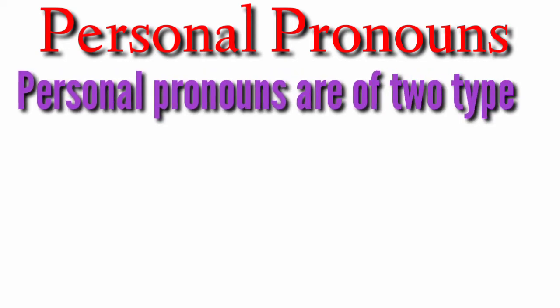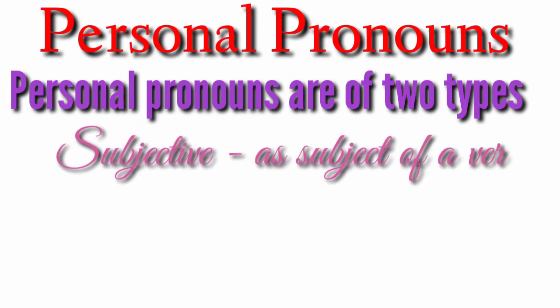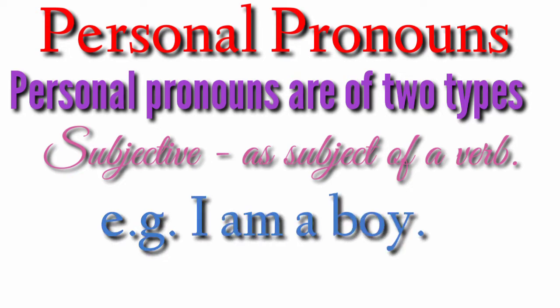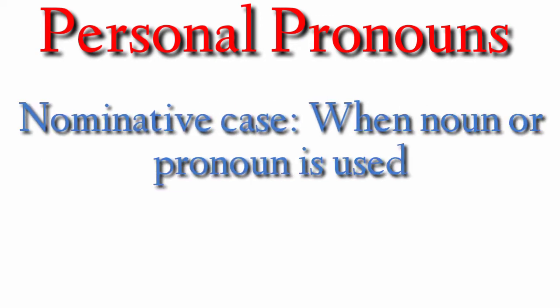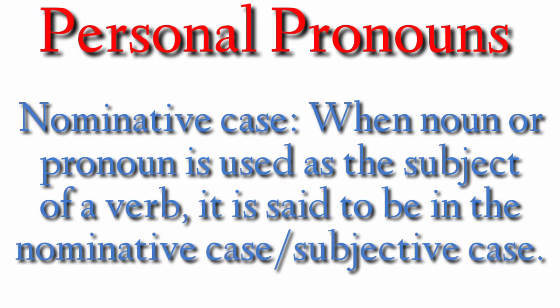Personal pronouns are of two types: subjective and objective. Subjective means used as the subject of a verb. For example, 'I am a boy' — here 'I' is used as subject of the verb. That is the nominative case. When a noun or pronoun is used as the subject of a verb, it is said to be in the nominative case or subjective case. Personal pronouns used as subjects are in the nominative case.